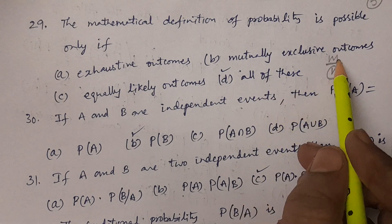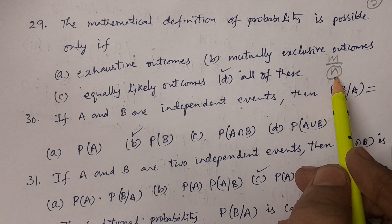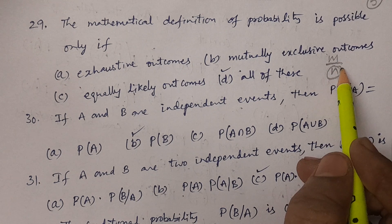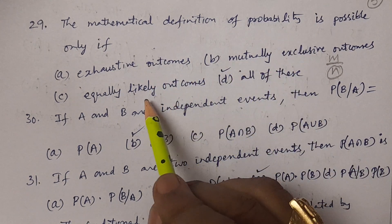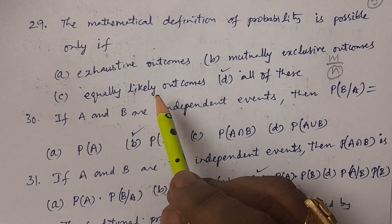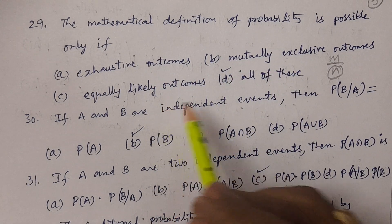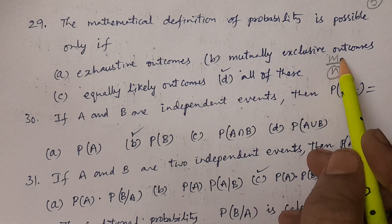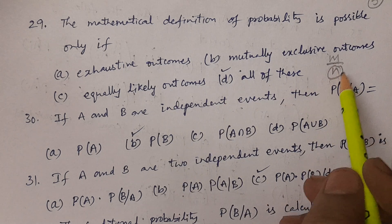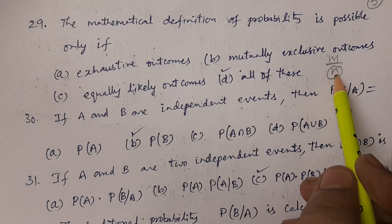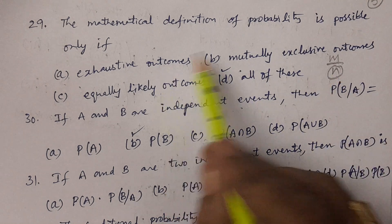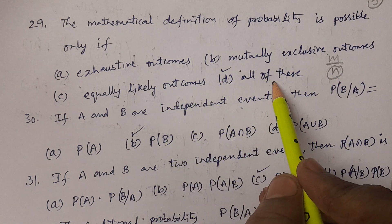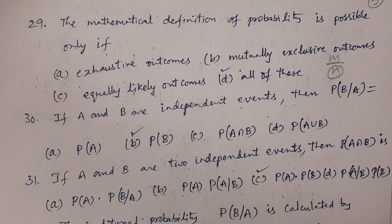This is the M by N probability formula. N should be exhaustive, mutually exclusive, equally likely, and defined. M is the number of favorable outcomes. So the answer is all of these.